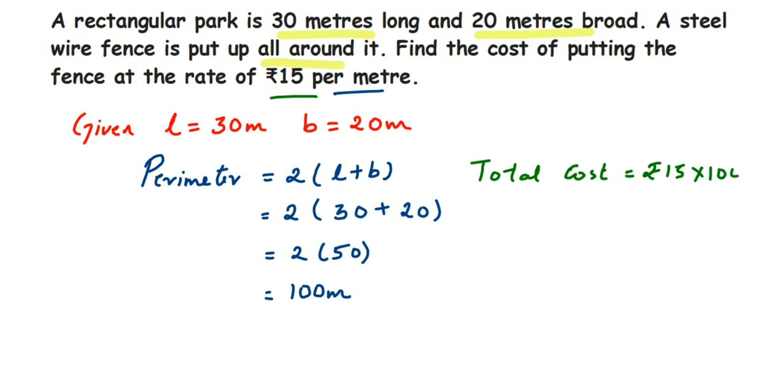equals 1500 rupees. So the total cost will be 1500 rupees. I hope it's understood how we got 1500 - for 1 meter it is 15 rupees, so for 100 meters it will be 15 times 100. This was a simple question. I hope it is clear. If you have any questions or doubts, you can drop a comment. Thank you so much for watching.